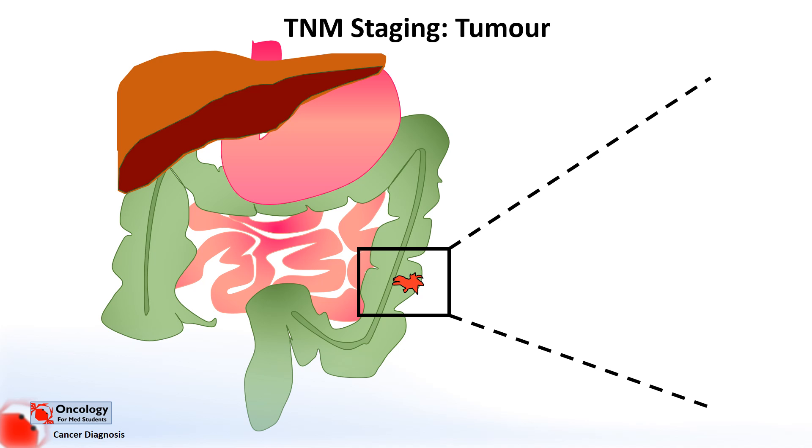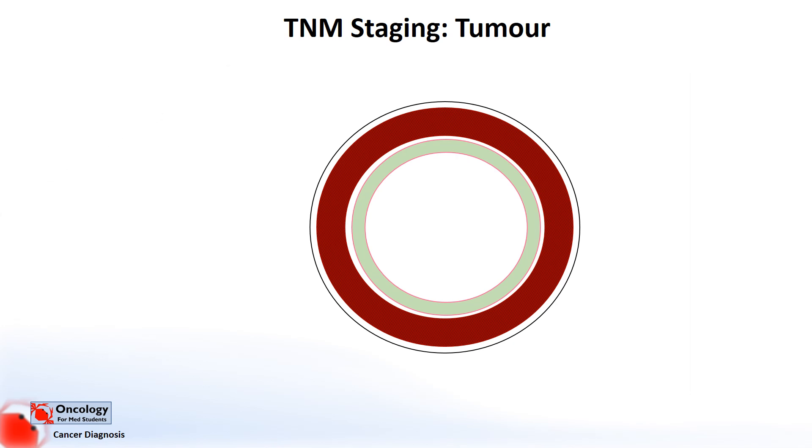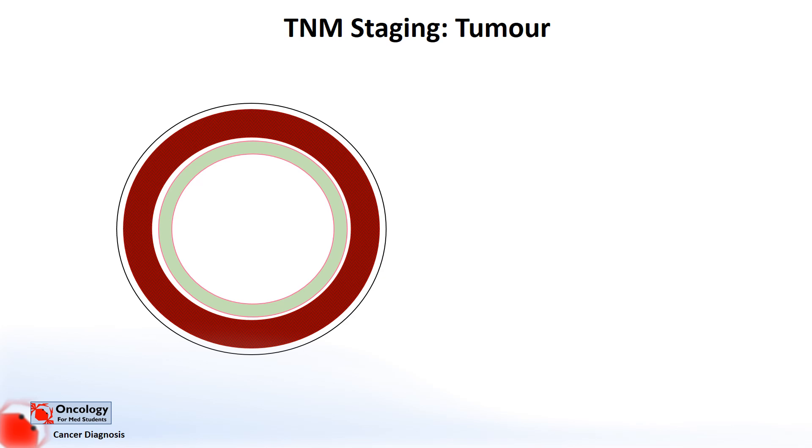If we have a closer look at the colon or the bowel and look at a cross-section, we can get an idea about how bowel cancers are staged. So here we can see a cross-section of the bowel. The bowel is made up of a number of layers: from the innermost layer of the tube, which is the bowel, are the mucosa, submucosa, the muscle layer, subserosa, and serosa.